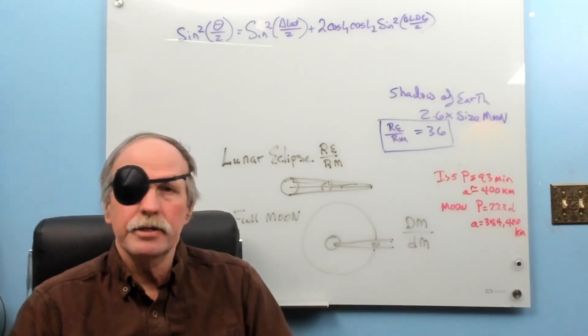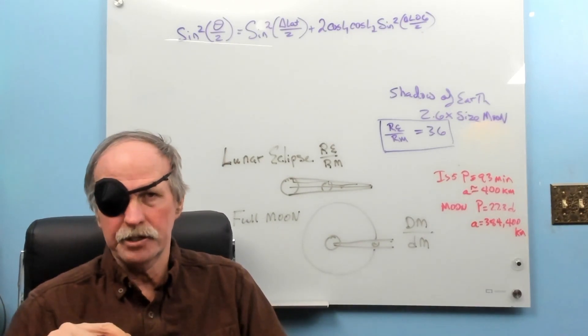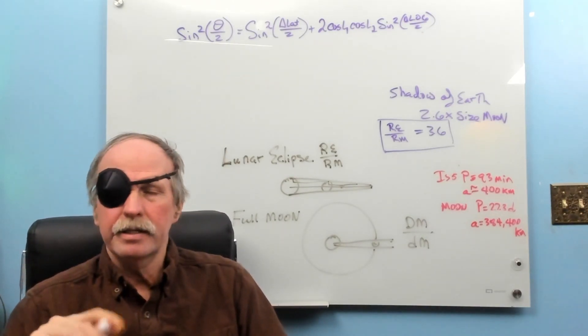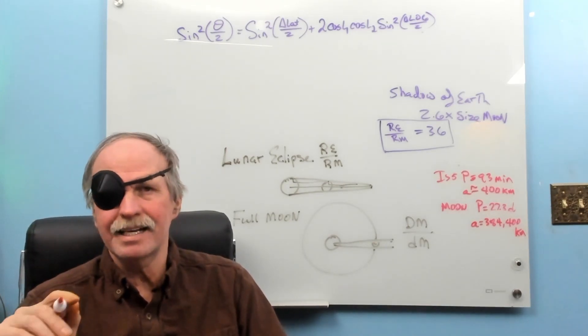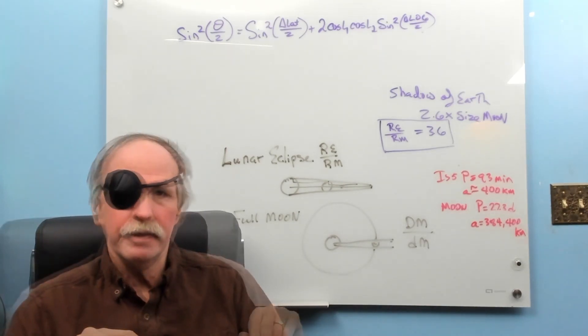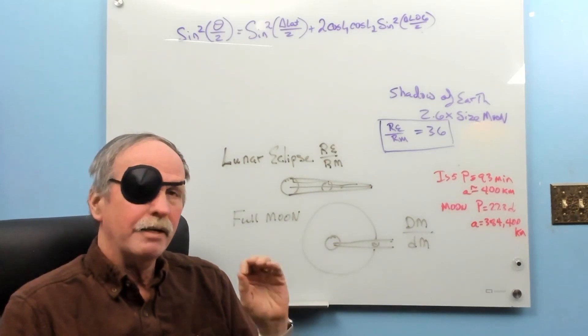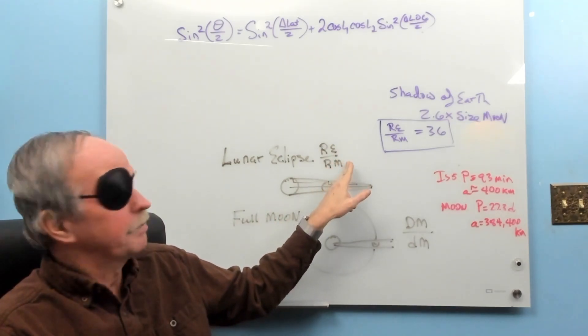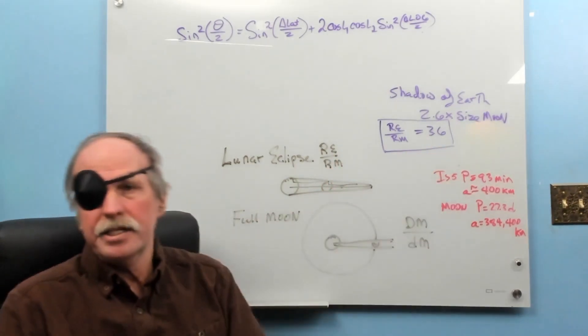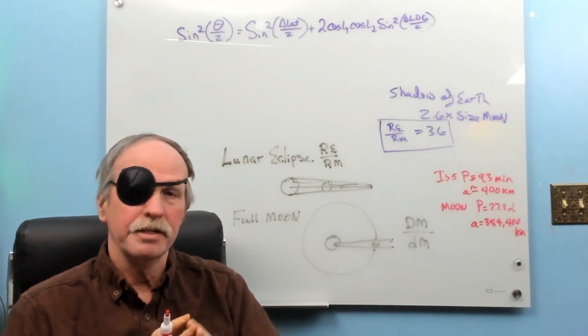Now, 2300 years ago a Greek astronomer by the name of Aristarchus of Samos developed a method geometrically to determine the size and distance of the Moon and the Sun in relationship to the Earth. Now, specifically he looked at the lunar eclipse and in a lunar eclipse the radius of the Earth to the radius of the Moon was 3.6. In other words, the Earth is 3.6 times the size of the Moon.